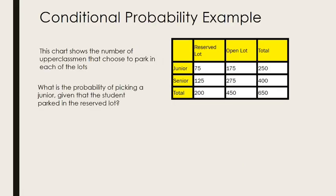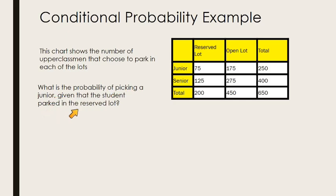This chart shows the number of upperclassmen that choose to park in each of the lots. We have juniors and seniors in total, and who parks in the reserved lot, the open lot, and total. So what's the probability of picking a junior given — here's our conditional part — that the student parked in the reserved lot? The first thing we need to do is define our events.